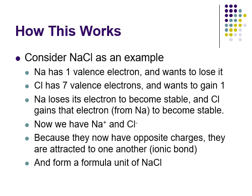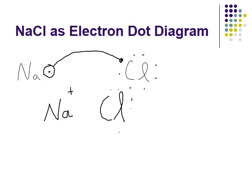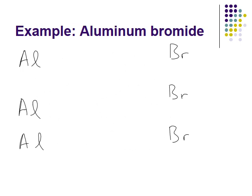It has a formula unit of NaCl because to be neutral we need one sodium and one chlorine - sodium has a plus one, chlorine has a minus one. Here's a drawing: sodium's valence electron goes over to the chlorine. Chlorine now has a full octet with a negative charge. Sodium now has a positive charge. They attract each other, and that is the ionic bond.